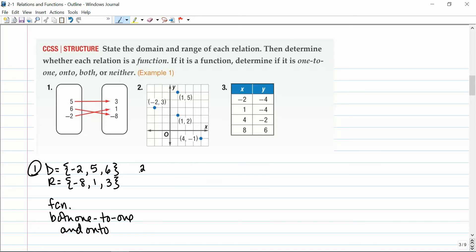Example number two here is just a graph of four distinct points. The domain, I'll just read off the x values here. So negative two, one, and four. The range is the y values, or negative one, two, three, and five. And you'll notice that this is not a function. And the reason it is not a function is because here we have a one as my x, and I also have a one here as x. So I have repeated x's, so this graph is not a function.